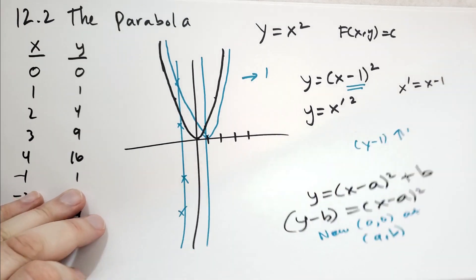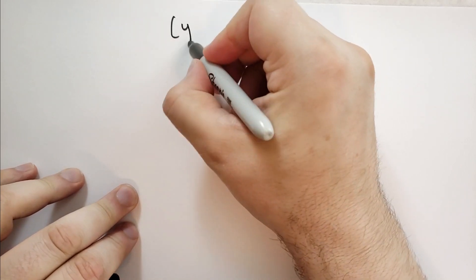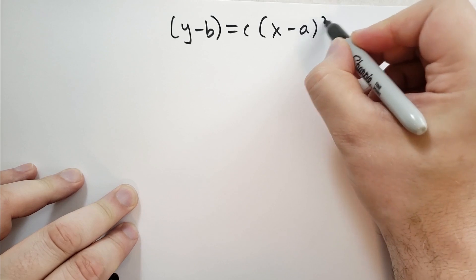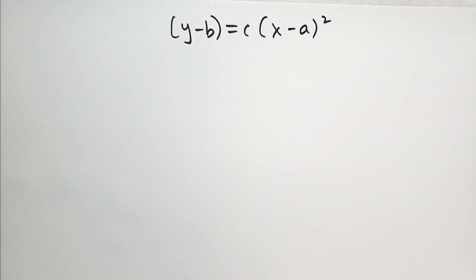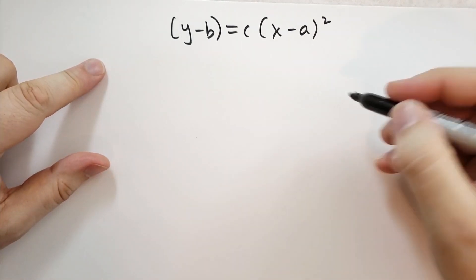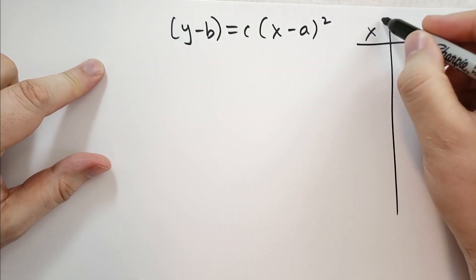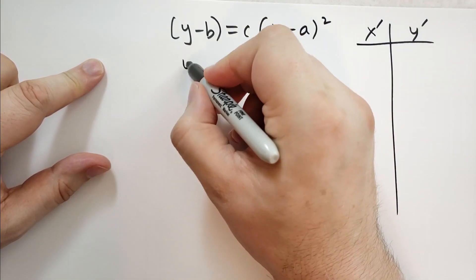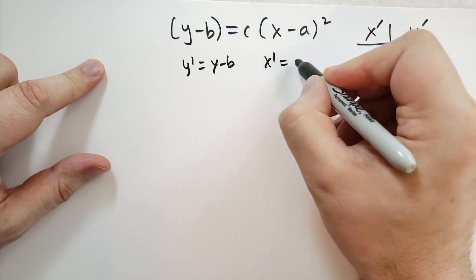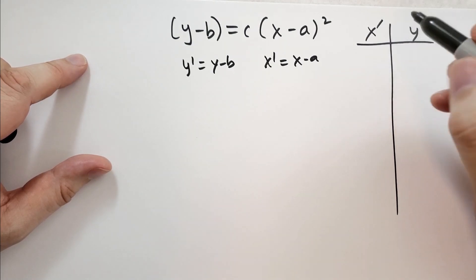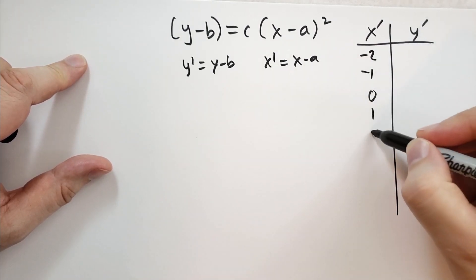What if we multiply? We're going to think of the form where we have y minus b equals some constant c times (x minus a) squared. What does this constant do? Well, let's draw ourselves a chart. We're going to have x prime and y prime, where y prime equals y minus b, and x prime equals x minus a. When x is minus 2, minus 1, 0, 1, and 2...